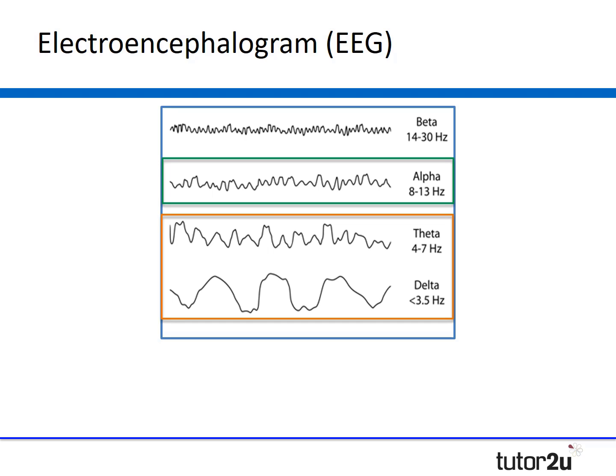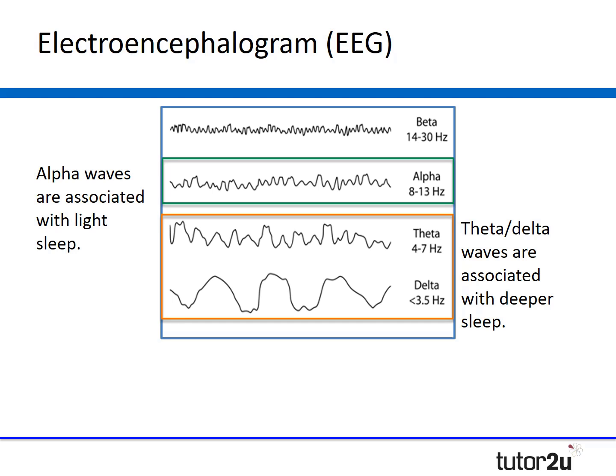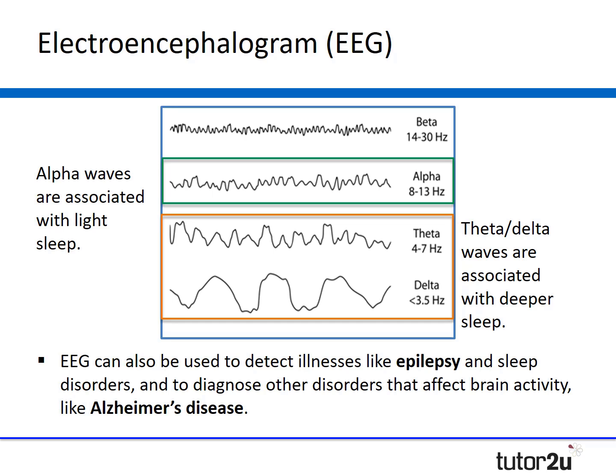Fast desynchronized patterns are usually found when a person is awake, although beta waves are also associated with a normal waking state when attention is directed towards a particular task. Synchronized patterns are typically found during sleep, which we'll look at in a later webinar on infradian and ultradian rhythms. Alpha waves are associated with light sleep, while theta and delta waves are associated with progressively deeper stages of sleep. EEG has also contributed to our understanding of REM sleep, associated with fast desynchronized activity indicative of dreaming, and has been used to detect epilepsy, sleep disorders, and conditions like Alzheimer's disease.